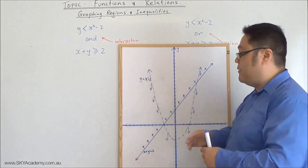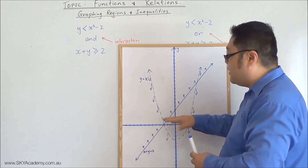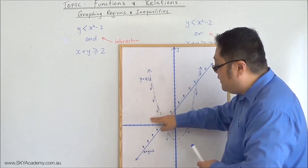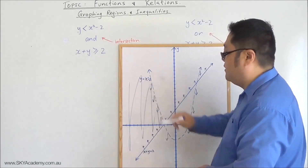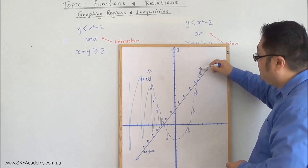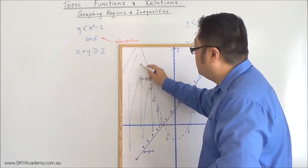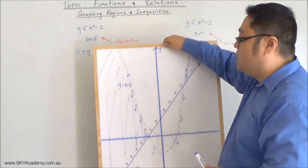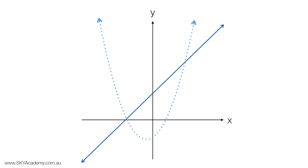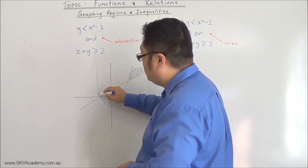So the intersection — using the word 'and' — is where both conditions are true at the same time; it's not either/or, both have to be satisfied simultaneously. Looking at the graph, that gives us that region here and that region there — those two areas form the intersection.